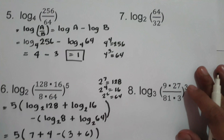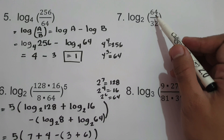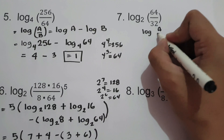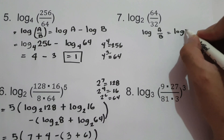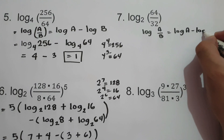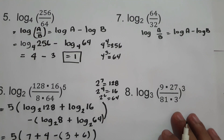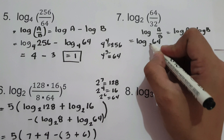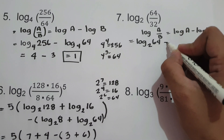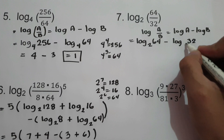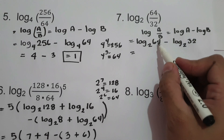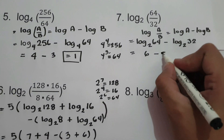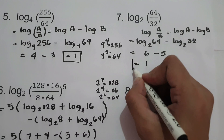For number 7, we have log of 64 over 32, base 2. Using the quotient property, log a over b equals log a minus log b. So we have log 64 base 2 minus log 32 base 2. Log 64 base 2 is 6, and log 32 base 2 is 5. Therefore, 6 minus 5 is 1. The answer is 1.